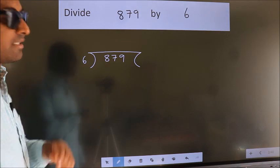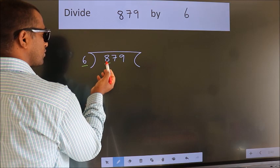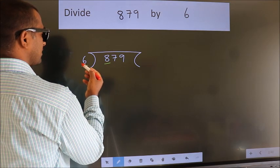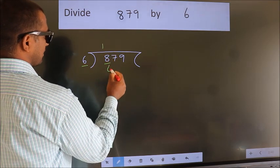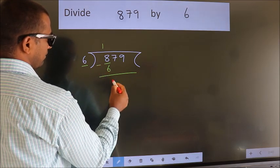Next. Here we have 8, here 6. A number close to 8 in 6 table is 6 times 1 is 6. Now we should subtract. We get 2.